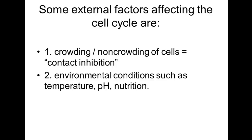If a cut or tissue damage separates contact between cells, that signals that something is wrong — there is no neighboring cell — and we need to divide and produce more cells. Normal cells respond to contact inhibition. Cancerous cells generally do not respond to contact inhibition.